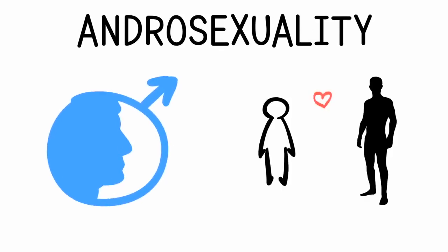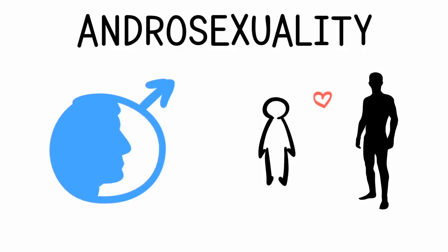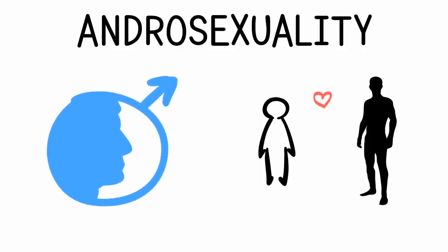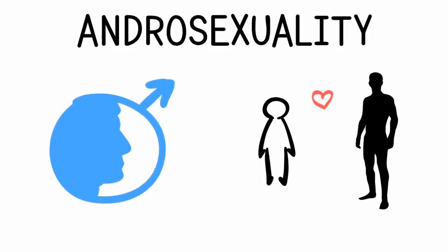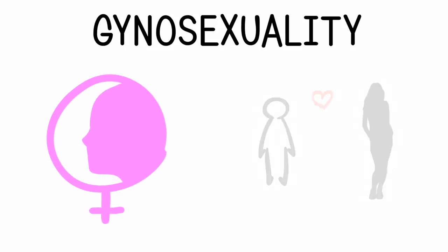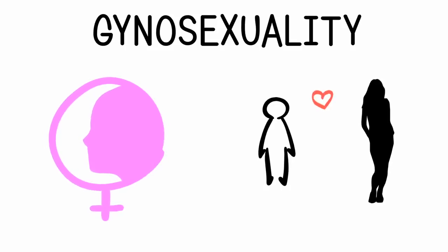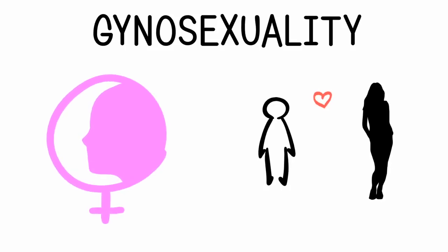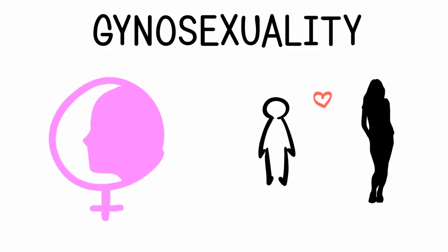Nine: androsexuality. Androsexuality is a sexuality that, outside of LGBT circles, is not well known at all. It refers to someone who is attracted to a masculine gender presentation, and can refer to anyone of any gender — man, woman, or non-binary. Ten: gynosexuality. Gynosexuality, like androsexuality, is not well known. It refers to someone who is attracted to a feminine gender presentation, and could again refer to any individual of any gender.